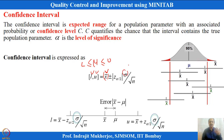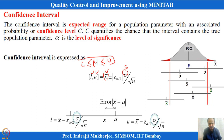If I have mean information and standard deviation estimates, I can say where μ should lie — this is the confidence interval. This gives a better assessment than saying x-bar exactly equals μ. Instead, I say that if x-bar is this value, μ should lie within this range, giving a confidence interval.